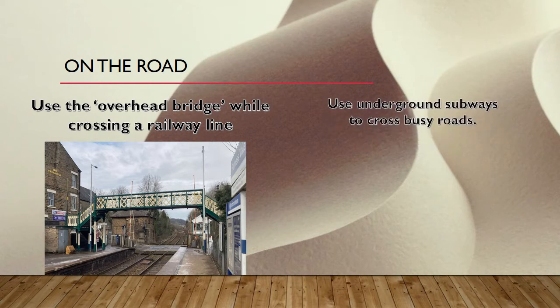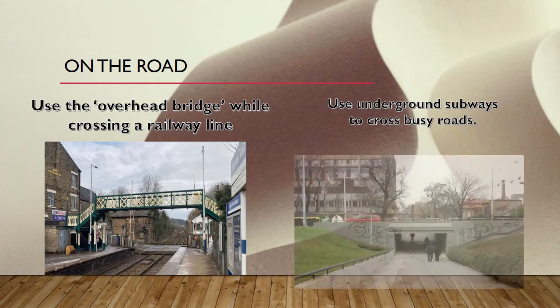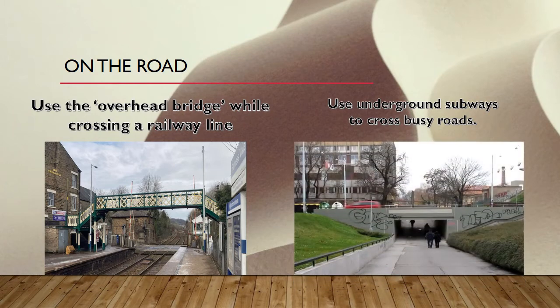Fourth rule: use underground subways to cross busy roads. To cross busy roads, you can use underground subways. Look at that picture — you can see the underground subways. Use the overhead bridge while crossing a railway line; use underground subways to cross busy roads.